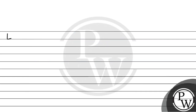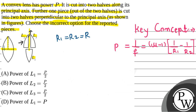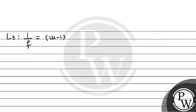Similarly, we calculate for lens L3. 1/f = (μ − 1) × (1/R1 − 1/R2). The only difference between L3 and L2 is the radius of curvature orientation. In L3, R1 goes to infinity, so we have: 1/f = (μ − 1) × (0 − 1/R2), giving P3 = (μ − 1)/R.